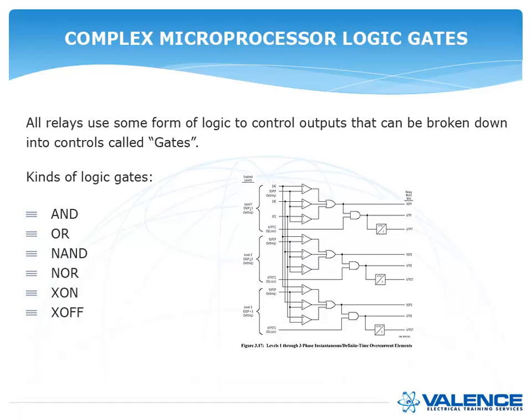All digital relays use some form of logic to control outputs that can be broken down into controls called gates. You can have an AND gate, an OR gate, a NAND gate, a NOR gate, an XOR gate, or an XNOR gate. Only the first two are typically used — you typically only have AND and OR gates.